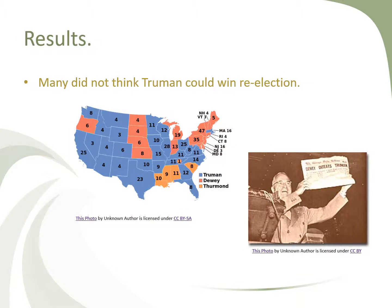Many did not think Truman could win reelection, but looking at the electoral map, Truman shocked the nation. He won a good portion of the Midwest and Western parts of the country, where he was from, as well as a good part of the central United States. He also won many Southern states, which many people did not think he'd be able to do given his role in civil rights. Dewey won most of the Northeast and parts of the Midwest, and Strom Thurmond won the Deep South for the Dixiecrats.